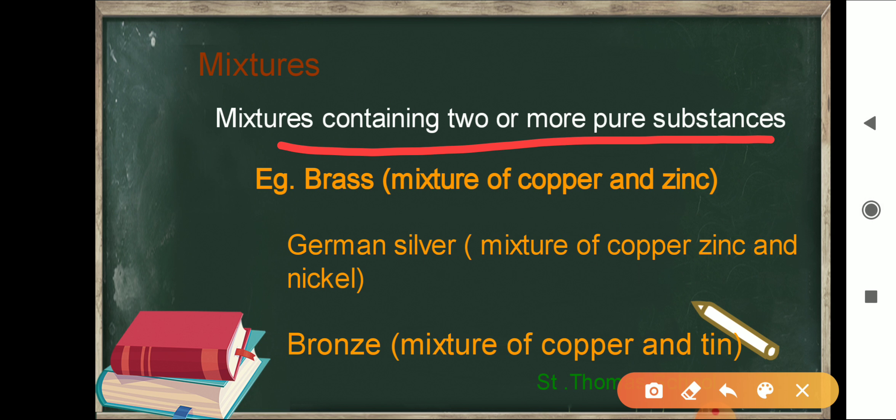For example, the properties of brass — a mixture of two substances, copper and zinc, which are pure substances. The second example is German silver, in which the mixture is more than two compounds: copper, zinc, and nickel. Third one is bronze, which is a mixture of copper and zinc. So these are three alloys.